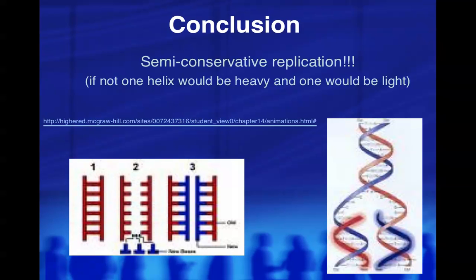So they discovered that semi-conservative replication is the correct method. The next video will discuss the more specific mechanics of how this actually happens. In summary, the parent strand splits down the middle, a new strand is added to each half, and you end up with two identical DNA molecules — each containing one parent strand and one daughter strand. That covers DNA structure, how scientists figured it out, and how DNA replicates.